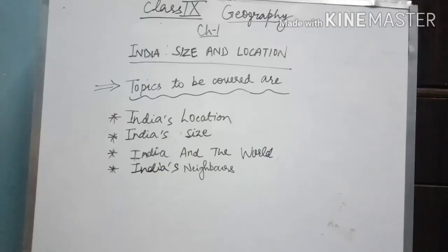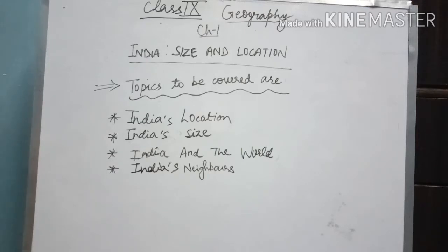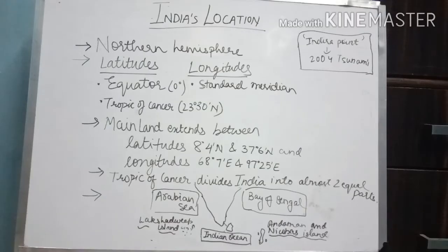Hello everyone, welcome to Score Good. Today we are going to do Geography Chapter 1, which is India: Size and Location for Class 9th. The topics we will cover in this chapter are India's location, India's size, India and the world, and India's neighbors.